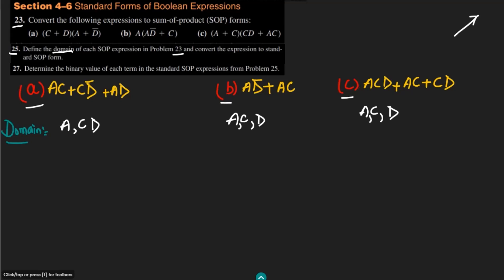Now after finding the domains, what we have to do is standardize them. Let me write the standard form. In order to convert them into the standard form, we look at each term — here we have AC, CD, AD — and wherever we have a missing item we add it using the expression I will show you. Here we have AC + CD' + AD, and all domain variables are A, C, and D.